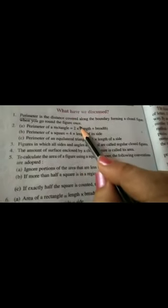Let's take a quick review on what we have discovered. This is on the last page of your chapter. Perimeter is a distance covered along the boundary forming a closed figure when we go around it. So this can come as a fill in the blanks. Next perimeter of rectangle is 2 times length plus breadth. Perimeter of square is 4 times length of any side. Perimeter of equilateral triangle is 3 into length of a side. Then figures in which all sides and angles are equal are called regular closed figures. These are points to be remembered. The amount of surface enclosed by a closed figure is called area.